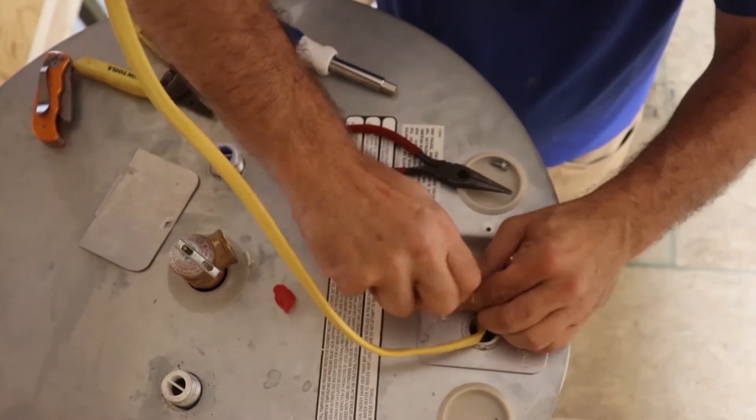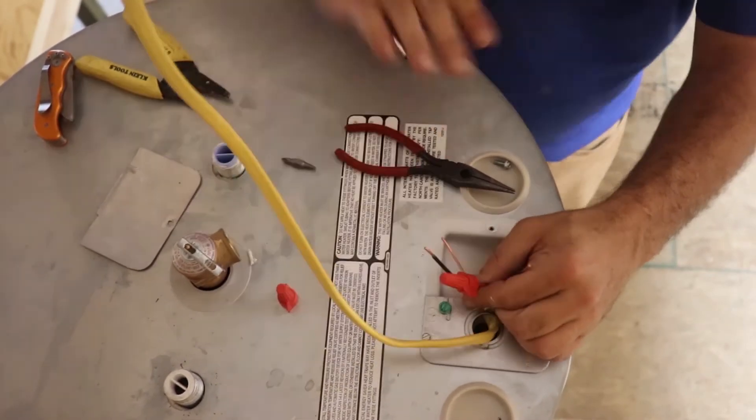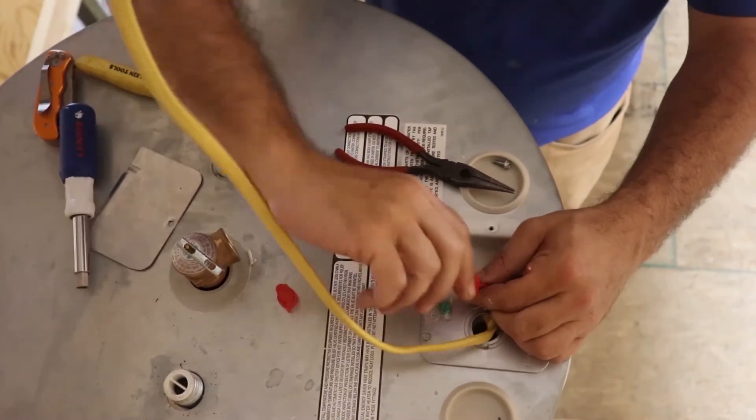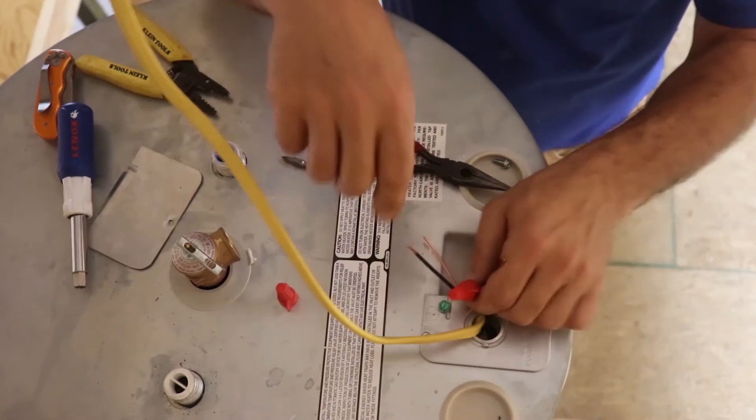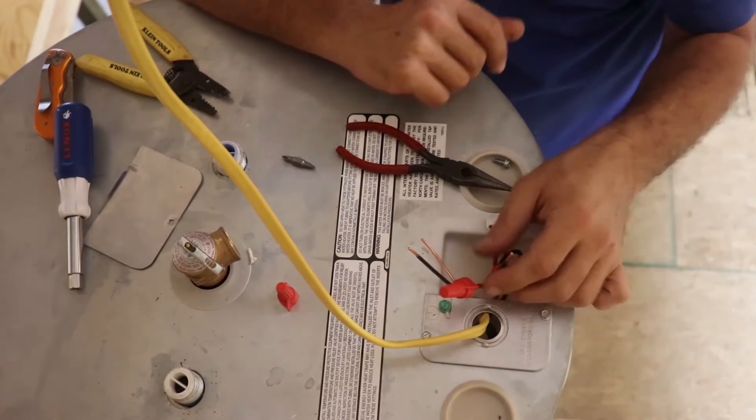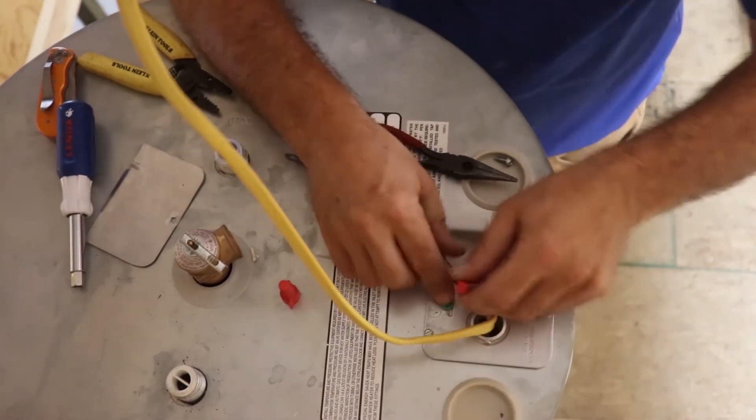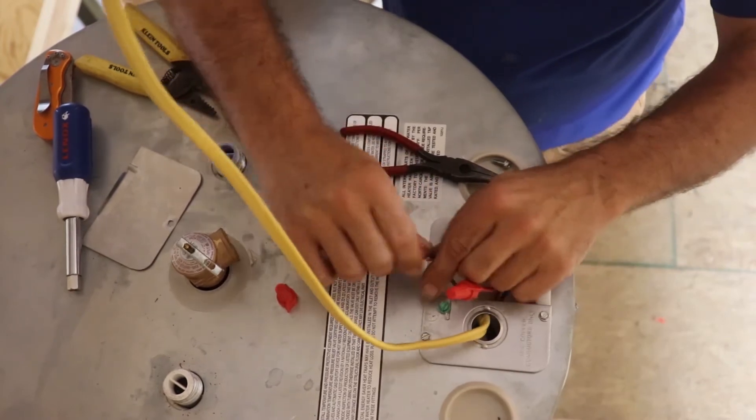And you're going to stick it on there, and you're going to push both of them up in there tight and twist that thing down. Give it good several twists to get it on there. And then what I normally do is I pull on these wires. I pull on that nut and I pull on that red wire, I pull on that white wire to see if they'll come out. If they don't come out, we're good.